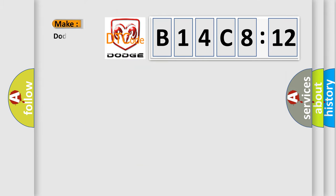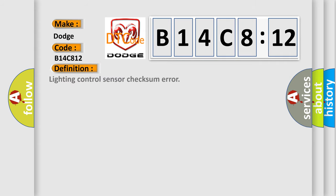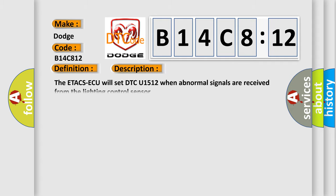So what does the diagnostic trouble code B14C812 interpret specifically for Dodge car manufacturers? The basic definition is Lighting control sensor checksum error. And now this is a short description of this DTC code. The ETACS will set DTC U1512 when abnormal signals are received from the lighting control sensor.